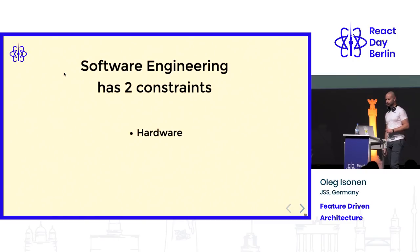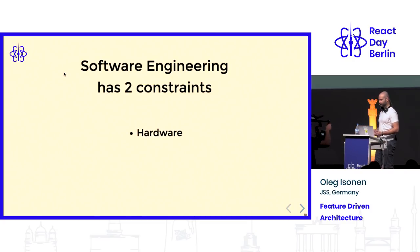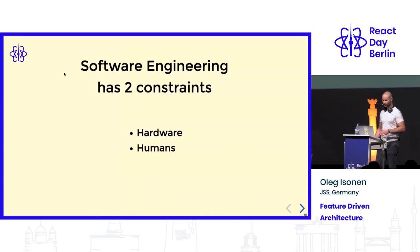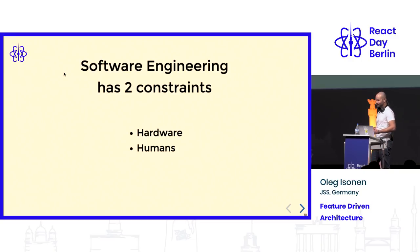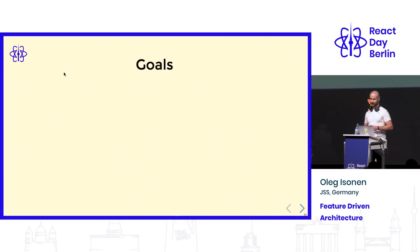I figured software engineering has two main limitations. It's hardware — which is obvious — or networking. And the second one, which is most annoying, is humans. Software is built by humans. We have to build it together. And this presentation is about humans.